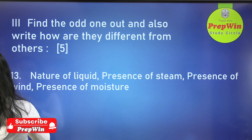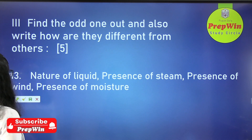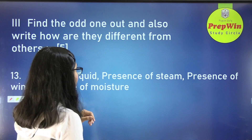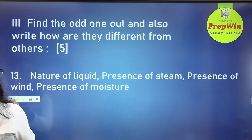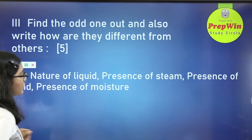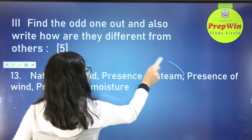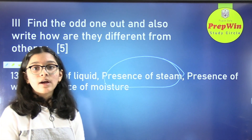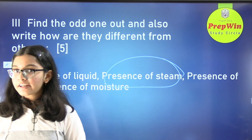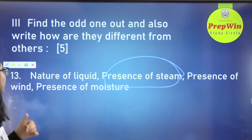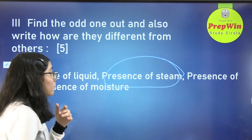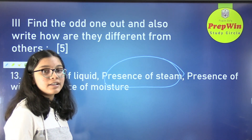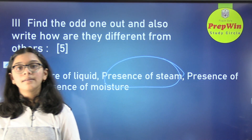The next question: nature of liquid, presence of steam, presence of wind, and presence of moisture. The answer is presence of steam, because the others are factors affecting evaporation. Evaporation depends on the nature of the liquid, presence of wind, and moisture present in the air.